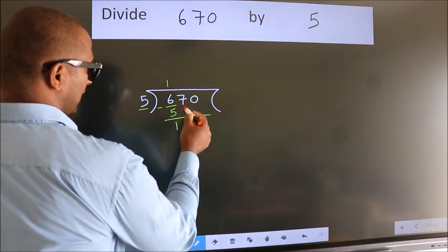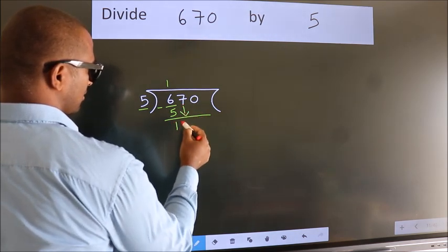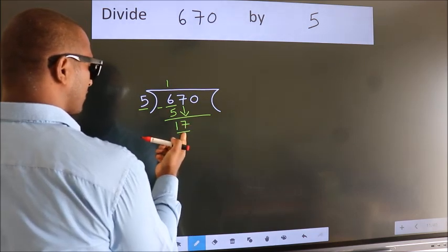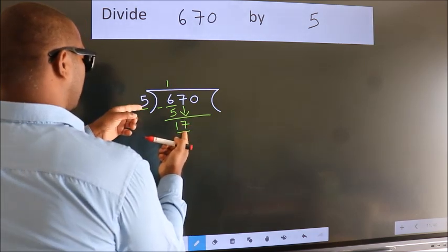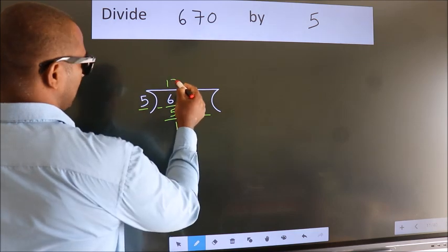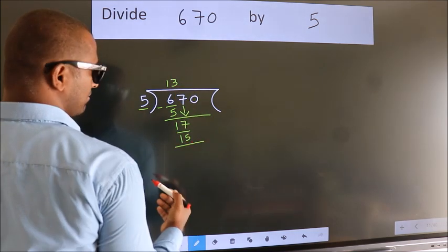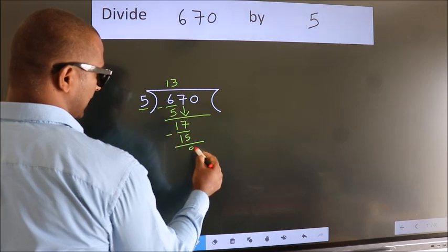After this, bring down the beside number. So 7 down. So 17. A number close to 17 in 5 table is 5 threes, 15. Now we subtract. We get 2.